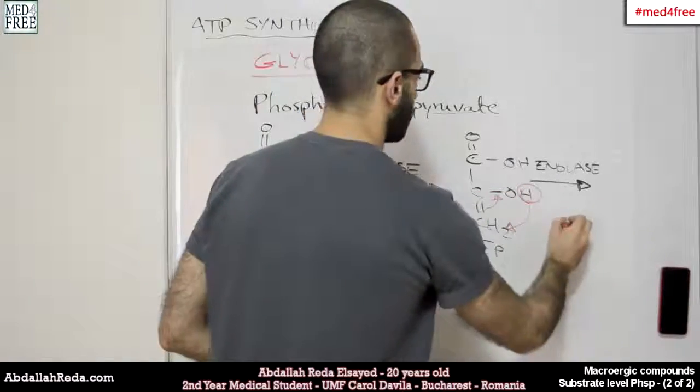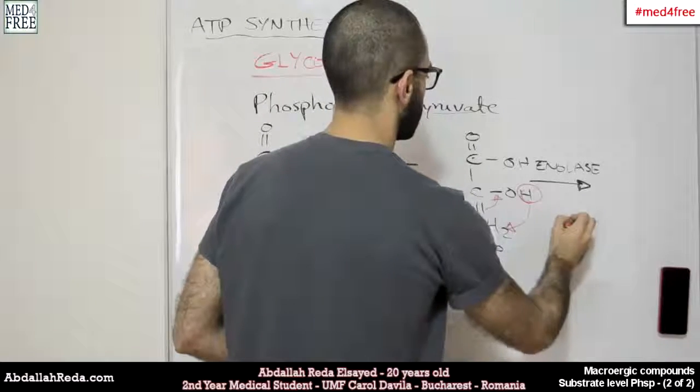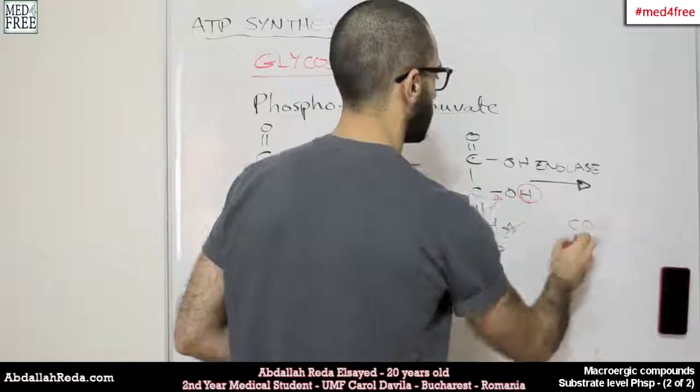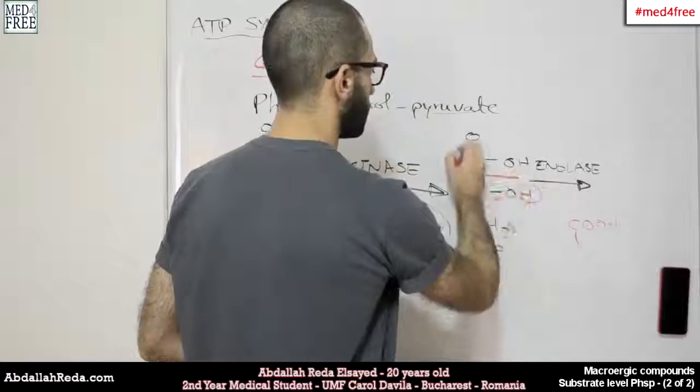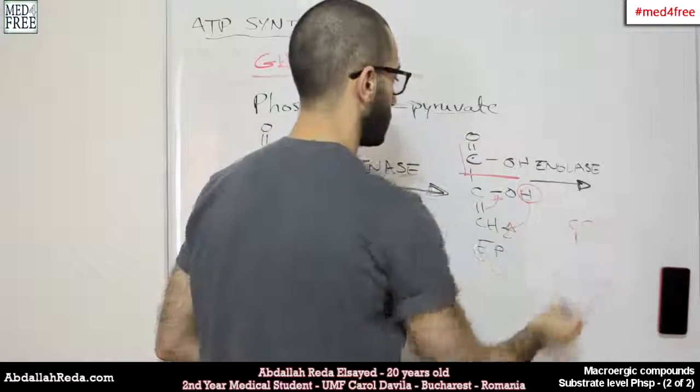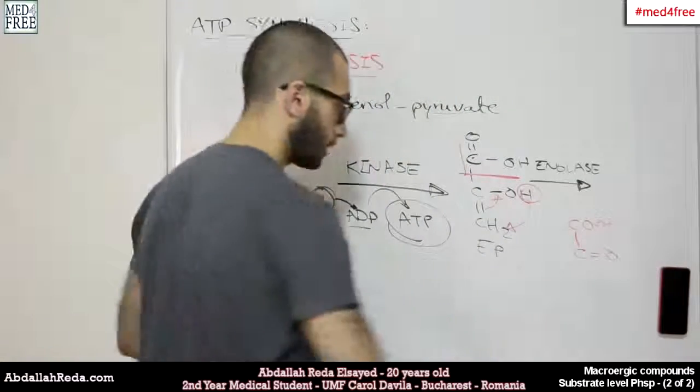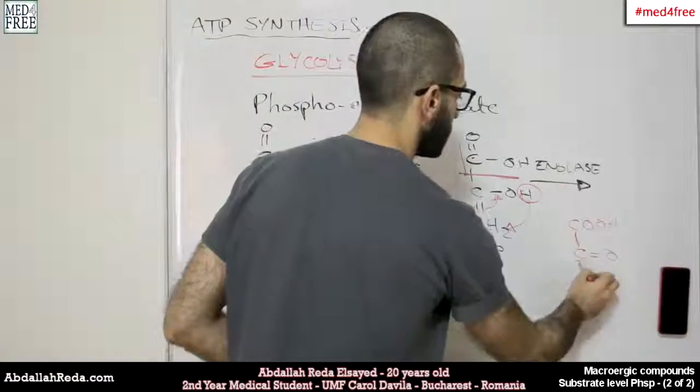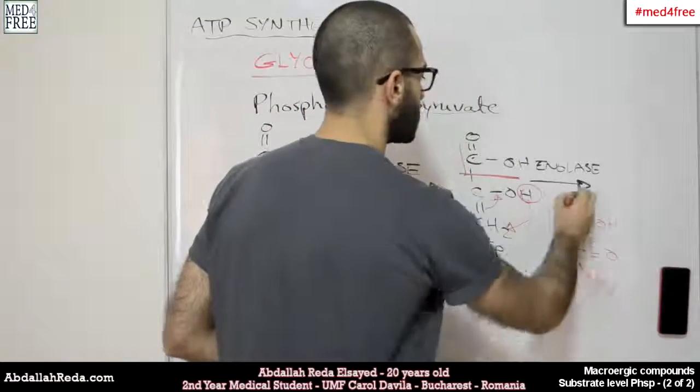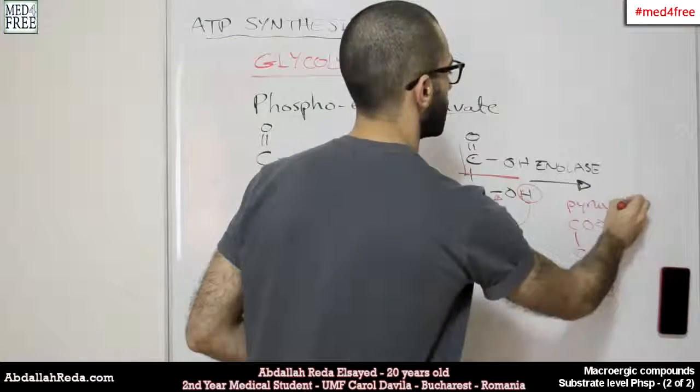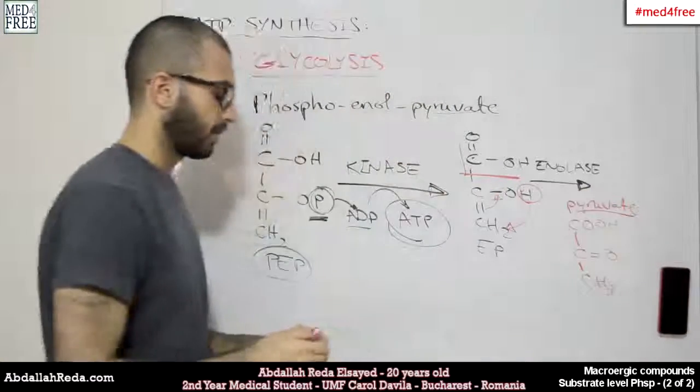The compound would look like that: COOH, which is this part - the carboxylic acid group. Then we have C double bond O, a carbonyl group. And then we have CH3, which is pyruvate. This compound is pyruvate.